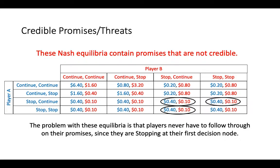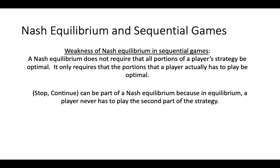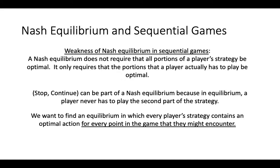All of these Nash Equilibria contain promises that are not believable. Since players are choosing to stop at their first decision node, they don't really have to follow through on these promises anyway. This example has revealed a weakness in the concept of a Nash Equilibrium when solving sequential games. The weakness is that the Nash Equilibrium does not require that all portions of a player's strategy be optimal, but only those portions of a strategy that a player actually has to play. This is why strategies like stop-continue can be part of a Nash Equilibrium — because the player never has to play the second part of the strategy, it doesn't really matter what the second part actually is.